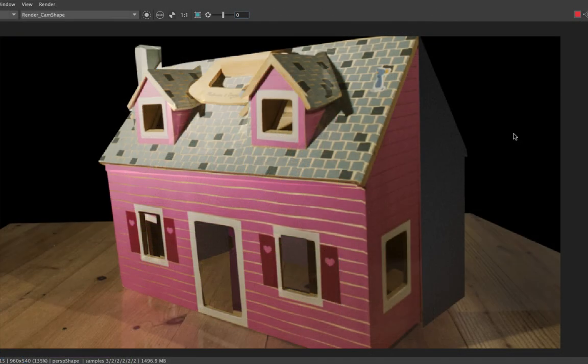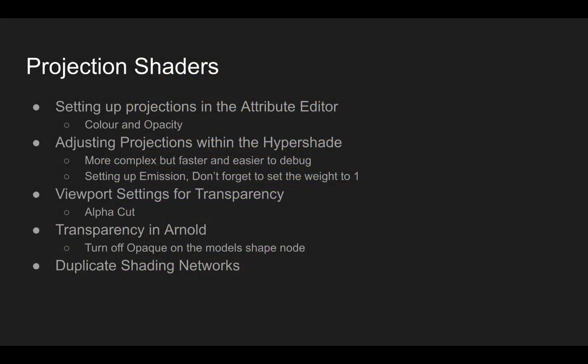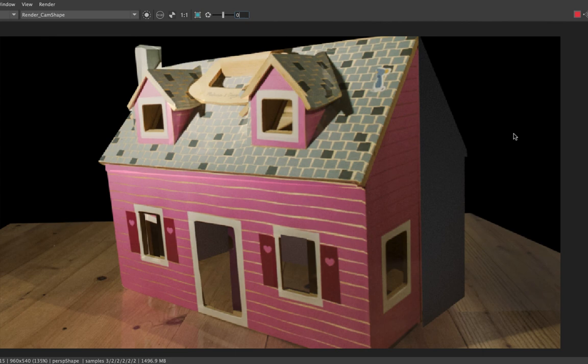So that was a brief overview of how to set up our projection shader. We looked at setting it up in the attribute editor for color and opacity, then setting up emission within the Hypershade. Along the way we took a quick look at the viewport settings to try and get an alpha cutout in the viewport, and we looked at setting up the render view — the issue there was the black outline in the render view, which we fixed by turning off Opaque on the model's shape tab. Towards the end we covered the most important tip: duplicating shading networks so you only need to set it up once, then swap out the textures for all other objects.